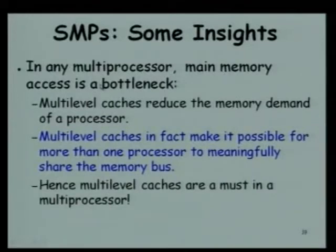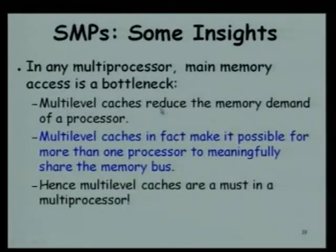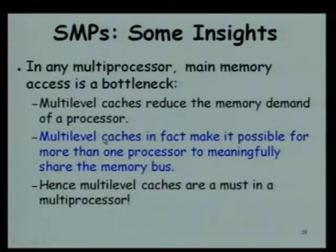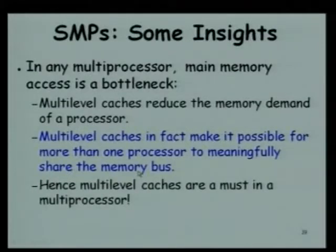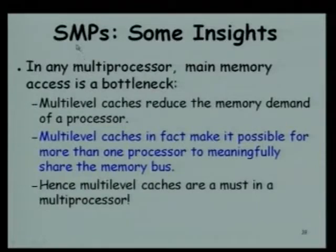In a single processor, the situation was bad enough, but what about multiprocessors? When multiple processors contend for the same memory, the situation can become still worse. We were discussing solutions like multilevel caches to reduce the memory demand on the memory system. The multilevel caches reduce the memory demand on the memory by a processor, and possibly by using multilevel caches, it would be possible for more than one processor to meaningfully share a memory bus.